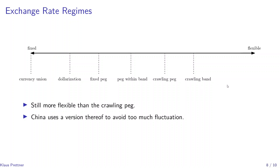More flexible still would be a crawling band. In this case, it is not a fixed value peg that is allowed to change gradually over time, but a band that is allowed to change. For example, China uses a version of this to avoid too much fluctuation in appreciations or depreciations of the yuan.